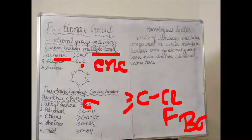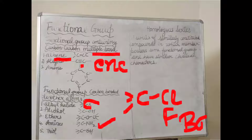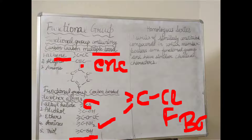Ethers have two carbons on both sides of oxygen. Then the amine group is there — that is C-NH2. Then the thiol group is there — that is C-SH. These are the different functional groups.